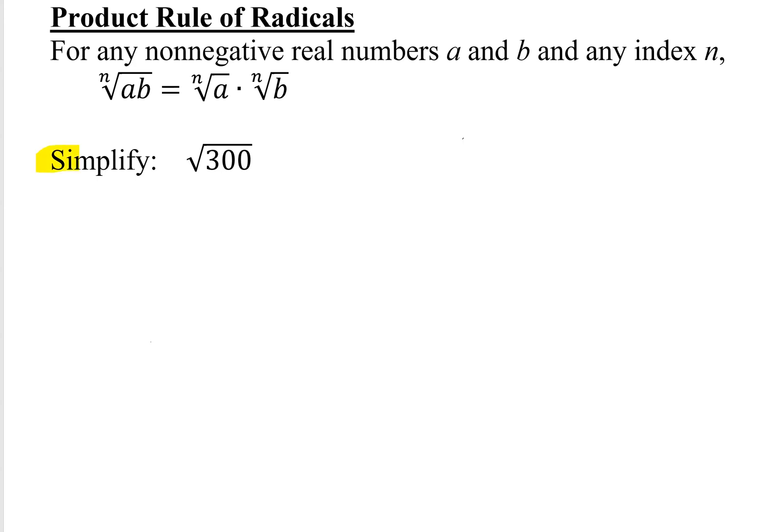In this problem, we're asked to simplify the square root of 300. I'm going to use the product rule of radicals that says for any non-negative real numbers a and b, and any index n, the nth root of ab equals the nth root of a times the nth root of b.